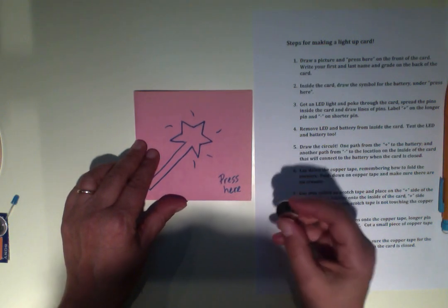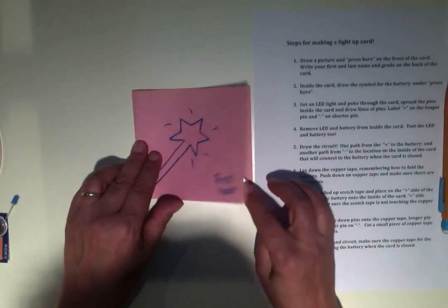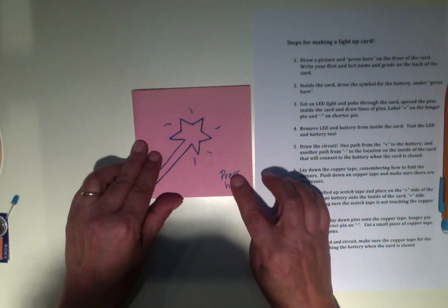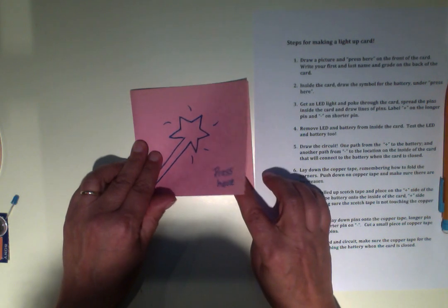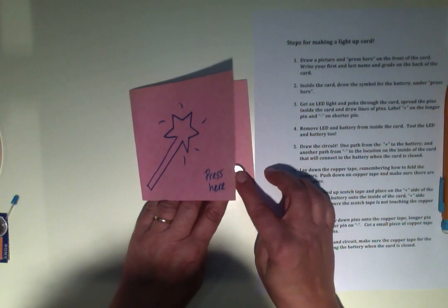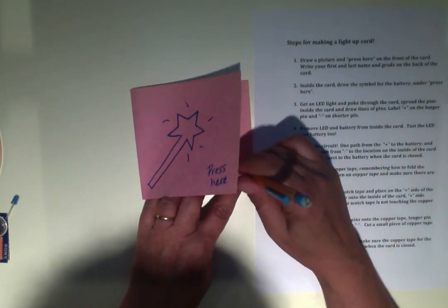The second step, inside the card I'm going to put where the battery is going to go. So right where it says press here, you're going to draw where the battery is going to go. I'll just outline it.